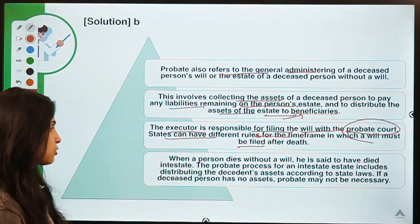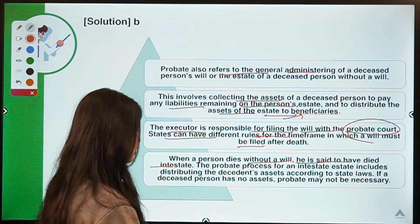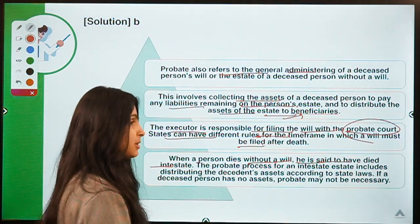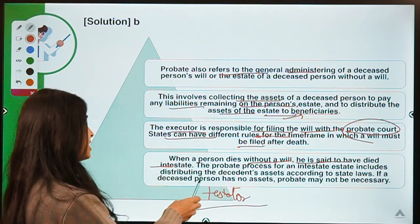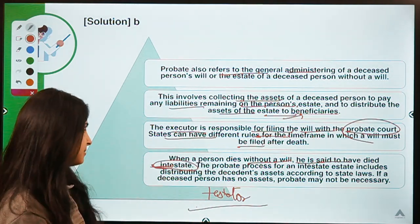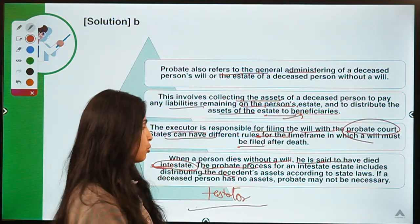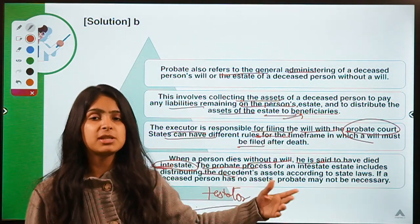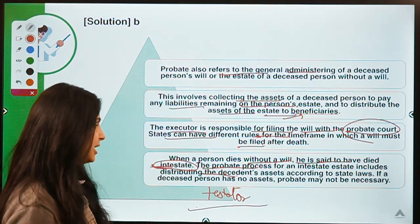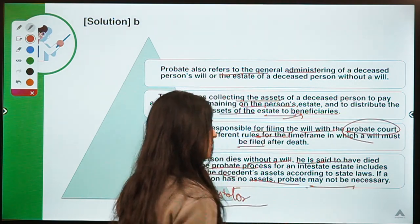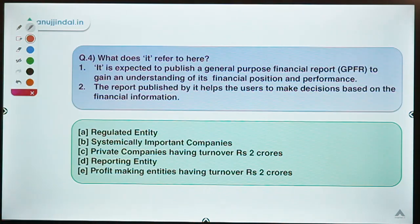If a person dies without a will, they are said to have died intestate. The grantor or person who creates a trust is also known as a testator, but if this person dies without a will they are said to have died intestate. The probate process for an intestate estate still includes collecting assets, paying debts, and distributing the remainder to legal heirs. However, in this case the probate may not be necessary because there is no will — no document of guidance.